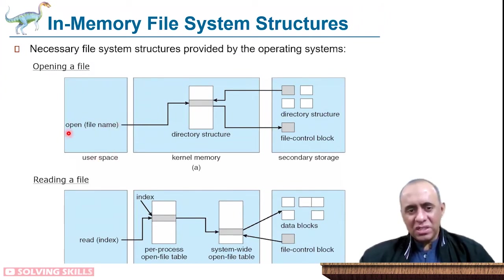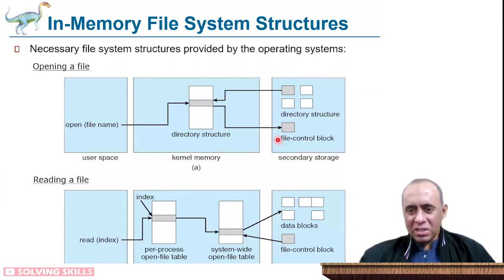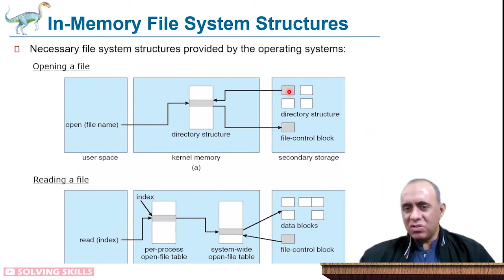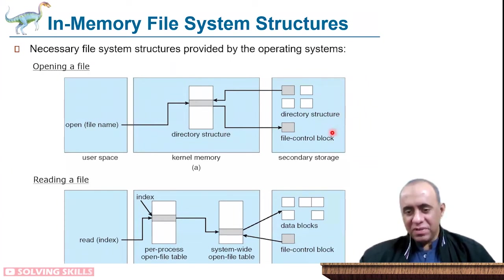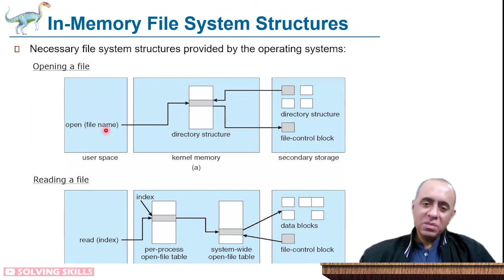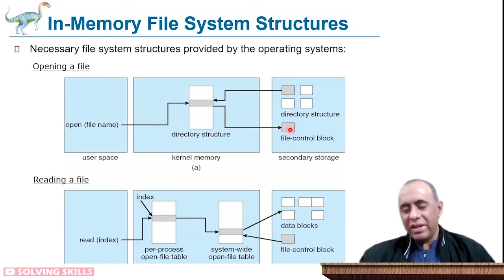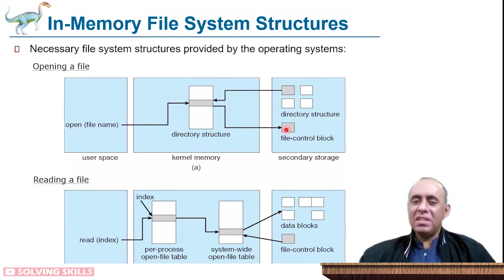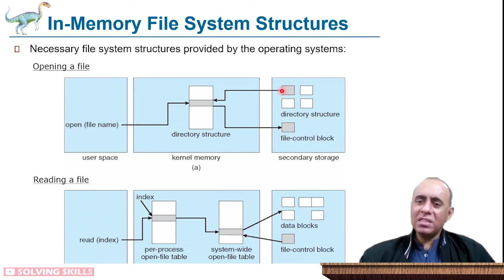There are three layers: the user space where the user makes system calls, the kernel memory, and the physical storage. Inside the physical storage, the file system contains file control blocks, and the directory structure manages how files are stored and where logical block numbers are located. When the user calls the open system call, the directory structure is used to locate the file control block. The kernel then uses permission information to verify whether this user is allowed to access the file, and once access is granted, the FCB indicates which part of the directory structure contains the addresses for the logical blocks.